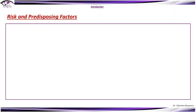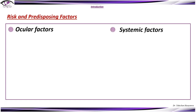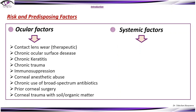Risk and predisposing factors of fungal keratitis include ocular and systemic factors. Ocular factors are contact lens wear, chronic ocular surface disease, chronic keratitis, chronic trauma, immunosuppression, corneal anesthetic abuse, chronic use of broad-spectrum antibiotics, prior corneal surgery, and corneal trauma with soil organic matter. Systemic factors include diabetes mellitus, HIV disease, and leprosy.